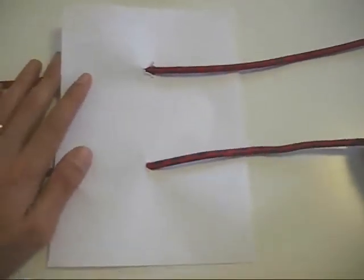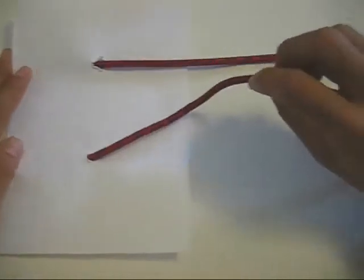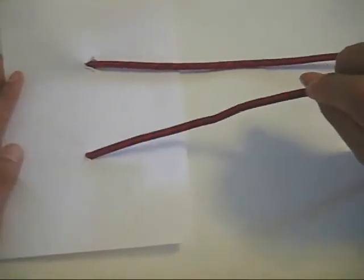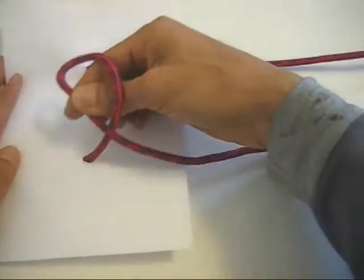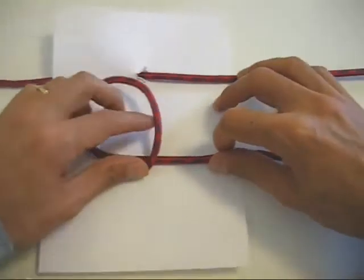Now take a hold of the bottom piece of cord, and what you want to do is hold it in your right hand and twist it away from you to make a loop like this.